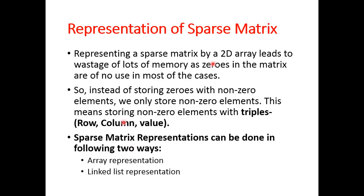Representing a sparse matrix by a 2D array leads to wastage of large amounts of memory, as zeros in the matrix are of no use in most cases. If you store sparse matrices as-is — storing zeros as well as non-zeros — you waste a large amount of memory. You can just store the non-zero elements only. So instead of storing zeros with non-zero elements, we store only non-zero elements as triples: the row index of the non-zero value, the column index, and the value itself.